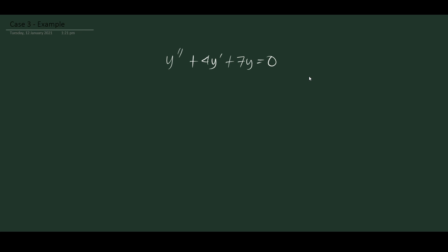Now if we follow the same methodology to getting the auxiliary equation from the previous examples, then we will get m squared plus 4m plus 7 is equal to 0.